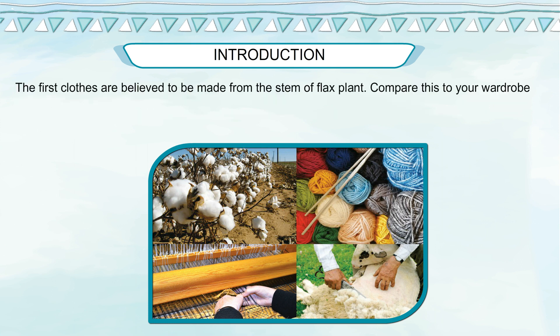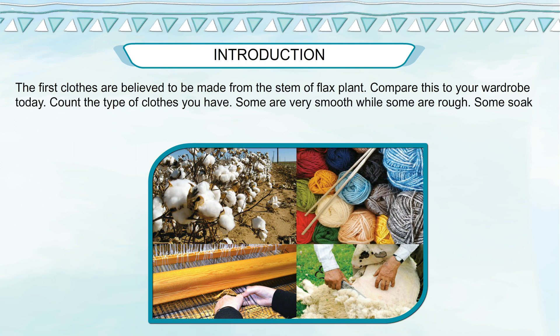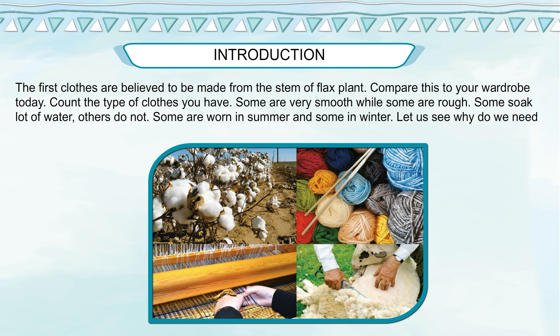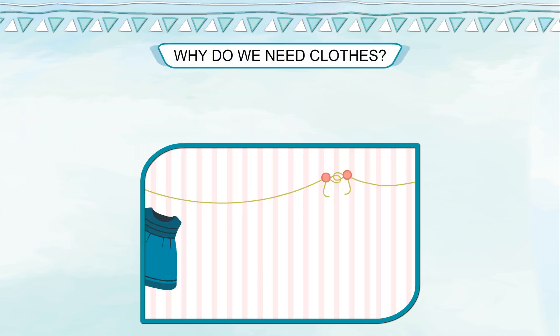The first clothes are believed to be made from the stem of the flax plant. Compare this to your wardrobe today — count the types of clothes you have. Some are very smooth while some are rough, some soak a lot of water while others do not, some are worn in summer and some in winter. Let us see why we need clothes and from where all these clothes come from.